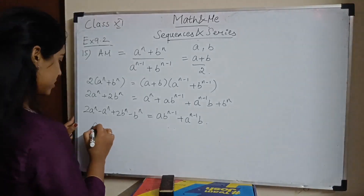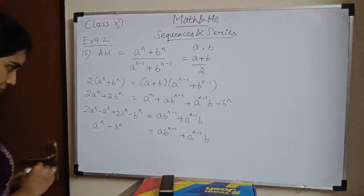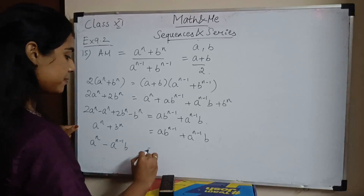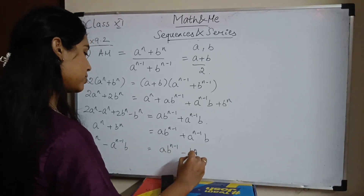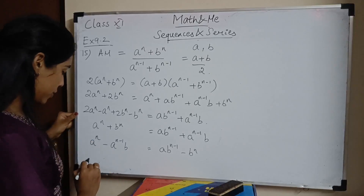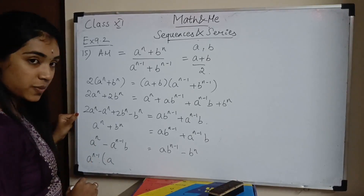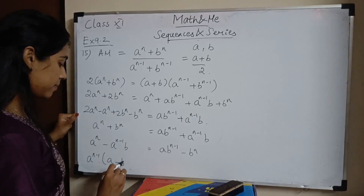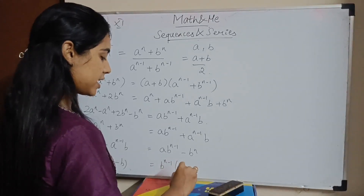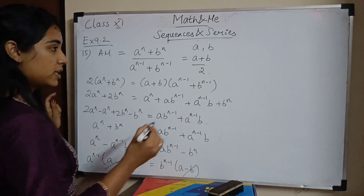Bringing aⁿ and bⁿ to the left: aⁿ + bⁿ = a·bⁿ⁻¹ + aⁿ⁻¹·b. Rearranging: aⁿ − aⁿ⁻¹·b = a·bⁿ⁻¹ − bⁿ. Factoring: aⁿ⁻¹(a − b) = bⁿ⁻¹(a − b). Since (a − b) appears on both sides, it cancels, leaving aⁿ⁻¹ = bⁿ⁻¹.